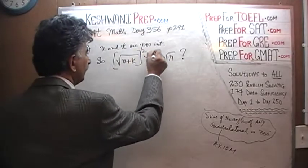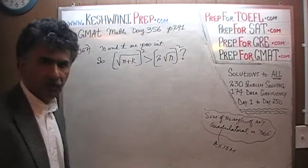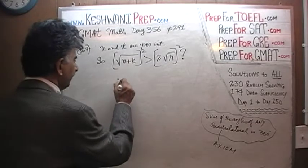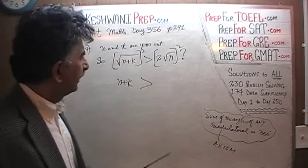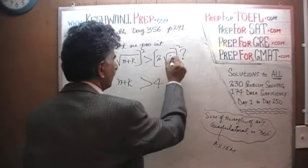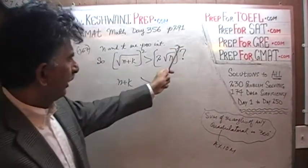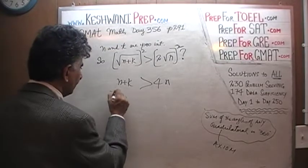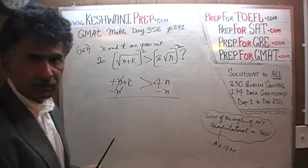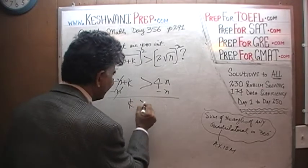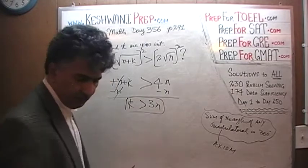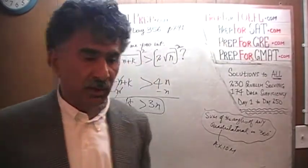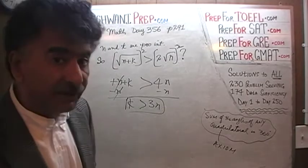Square both sides — nobody said squaring both sides is illegal, and it will not affect the inequality. The square of the square root of (n plus k) is simply n plus k, which must be greater than 4n (since 2 squared is 4 and the square root of n squared is n). Subtracting n from both sides, the question reduces to: is k greater than 3n? That is what they are asking.